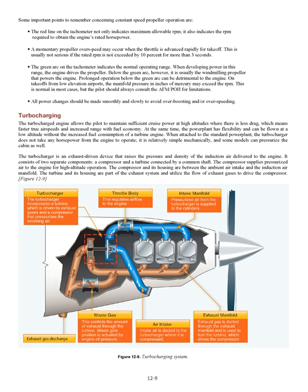The green arc on the tachometer indicates the normal operating range. When developing power in this range, the engine drives the propeller; below the green arc, it is usually the windmilling propeller that powers the engine. Prolonged operation below the green arc can be detrimental to the engine. On takeoffs from low-elevation airports, the manifold pressure in inches of mercury may exceed the RPM—this is normal in most cases, but the pilot should always consult the AFM/POH for limitations. All power changes should be made smoothly and slowly to avoid over-boosting and/or over-speeding.